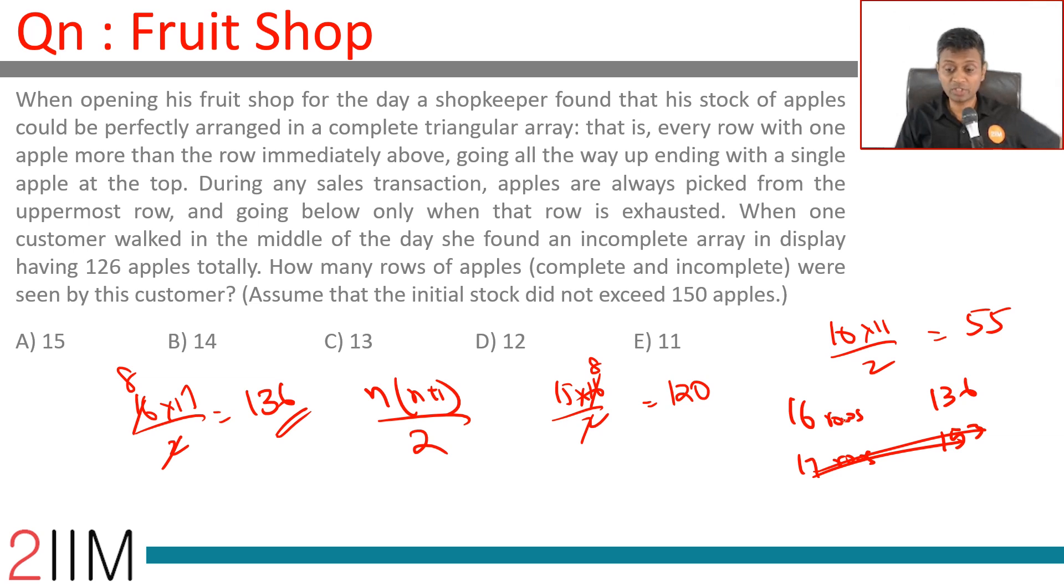When one customer walked in the middle of the day, she found an incomplete array in display. Out of the 136 rows, 16 rows give us 136, and then she is finding an incomplete row. Therefore, she is able to see only 126.